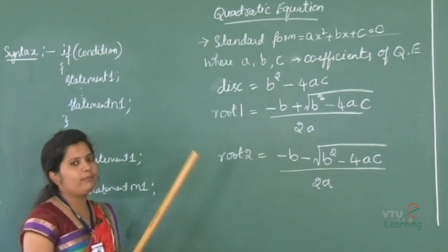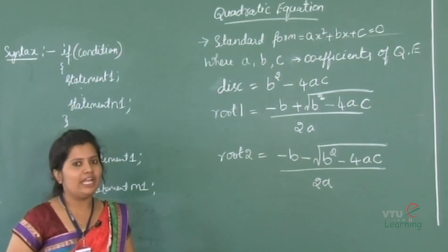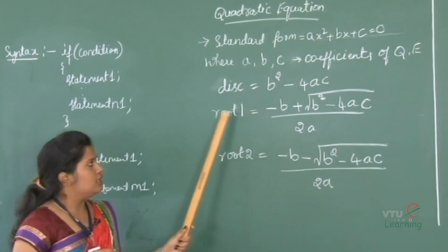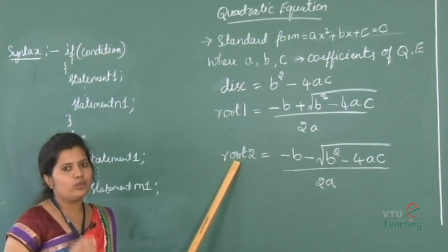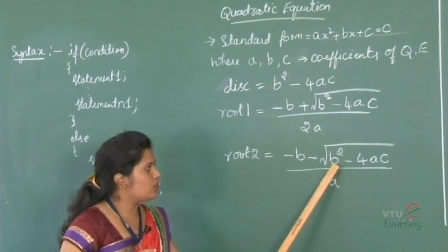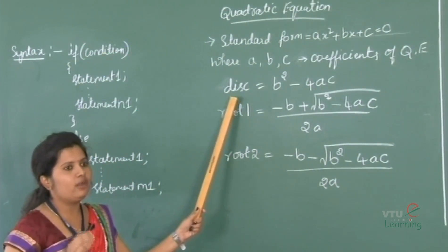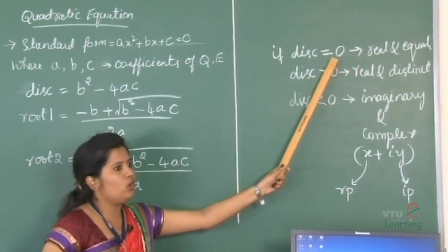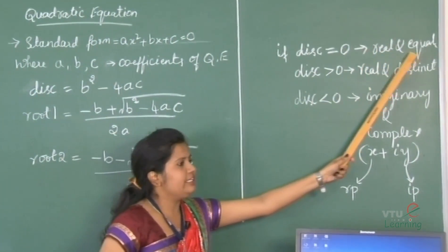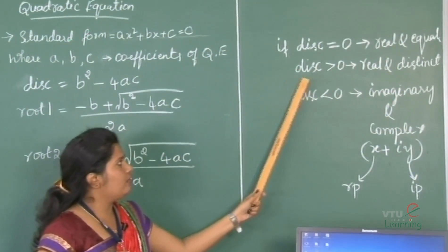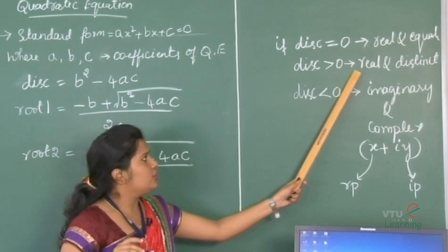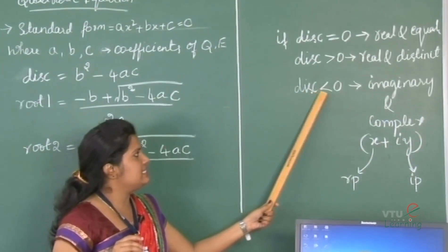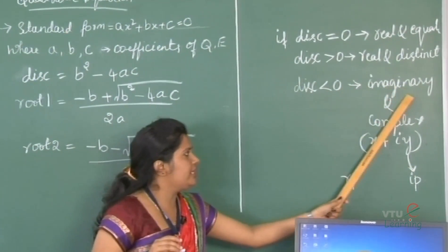The value of root 1 and root 2 will be calculated by reading some values for the coefficients A, B and C. By applying those values, root 1 and root 2 will be computed. Here we have taken B squared minus 4AC as a discriminant value. If the discriminant value is equal to 0, then the roots are real and equal. If the computed value of discriminant is greater than 0, then the roots are real and distinct. If the computed value of discriminant is less than 0, then the roots are imaginary and complex.